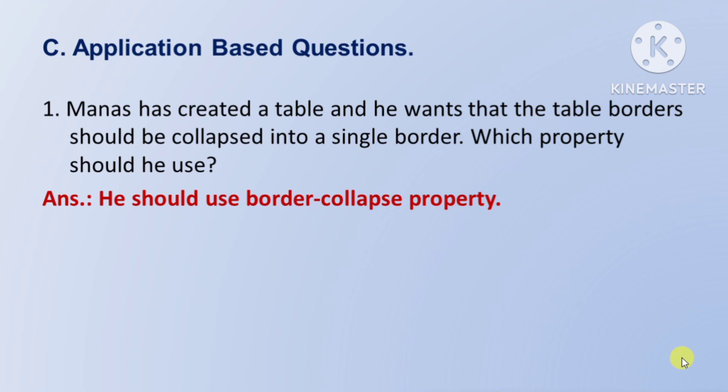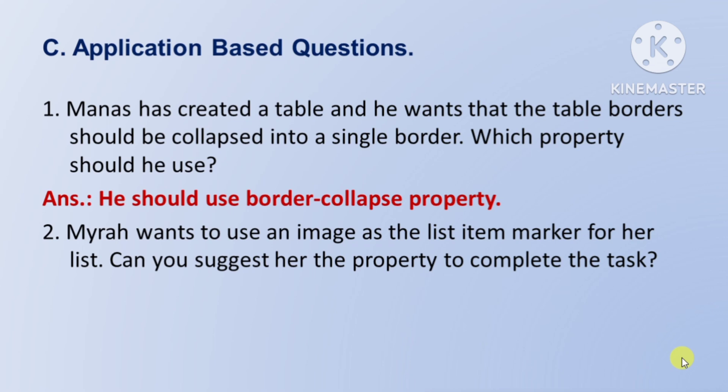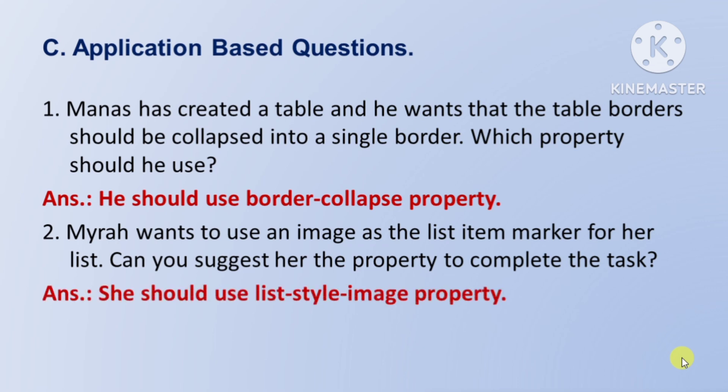Toh yeh true hai. Next question: Myra wants to use an image as the list item marker for her list — Myra apne list ke liye ek image ko list item marker ki rup mein prayog karna chahti hai. Can you suggest her the property to complete the task? Toh iska answer hai: she should use the list-style-image property.